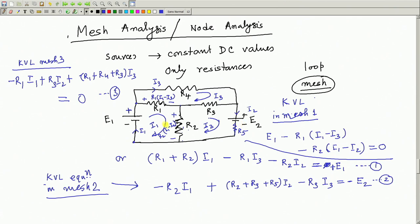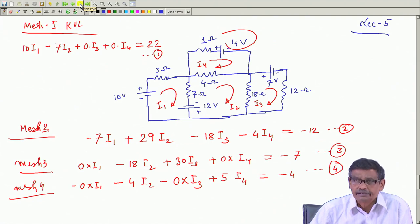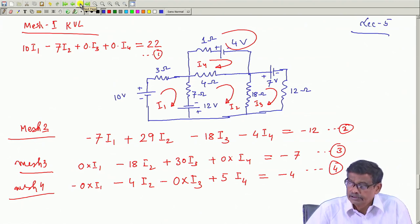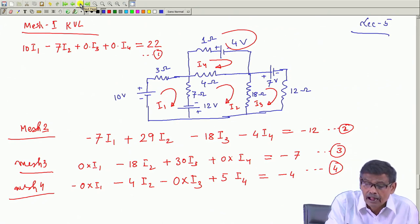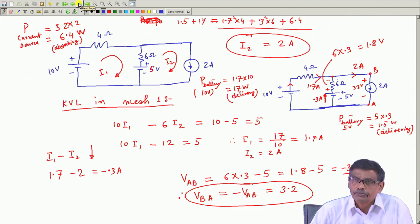Welcome to lecture number 6. We have been discussing 2 very popular methods of solving network problems. I will be considering DC sources only and only resistances, to get an idea how we apply this method. In mesh analysis, identify the number of meshes - the number of equations to be solved is equal to the number of meshes. If you are lucky, you can reduce the number of equations provided there exist some current sources in the outer meshes.